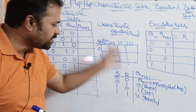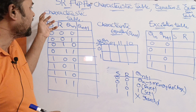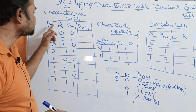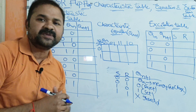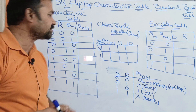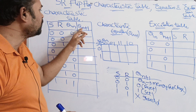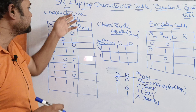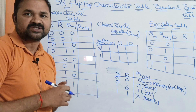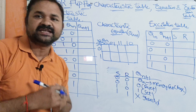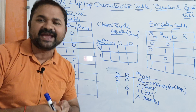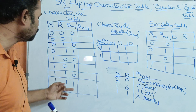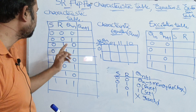Now, based on the truth table, we have to construct the characteristic table. Here the inputs are S, R, and Qn — where Qn means current state output — and the output is Qn+1, the next state output. This table has 3 inputs and 1 output, so we can have 2³ = 8 combinations. We have written the binary equivalents from 0 to 7.